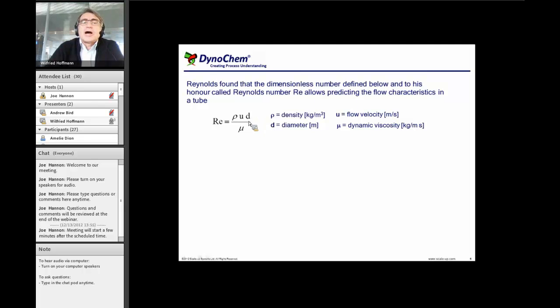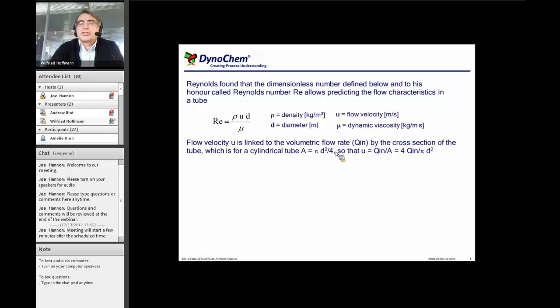the higher the Reynolds number is, but that's not true because the flow velocity here is linked to the volumetric flow rate by the cross section. And that is a function of the square of the diameter. So actually the other opposite is true. So the smaller the diameter, you have larger Reynolds numbers and the larger the diameter, you get smaller Reynolds numbers.